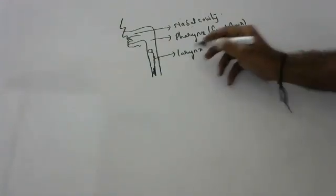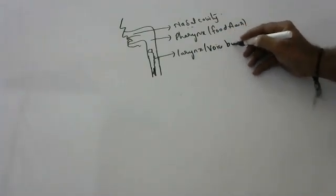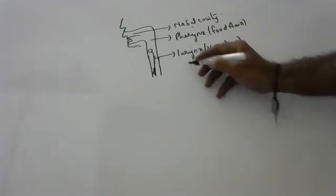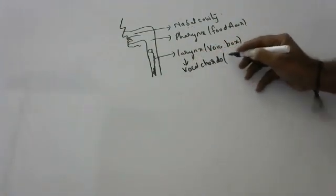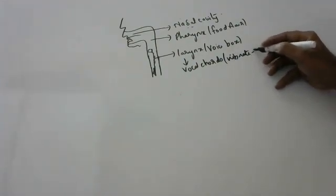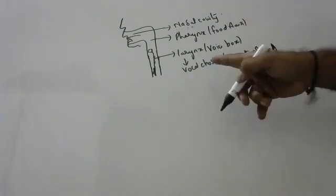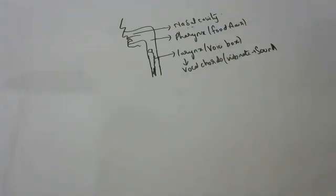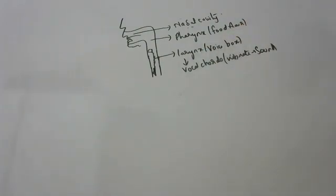The larynx is also called the voice box. The larynx has vocal cords which vibrate when we are talking and produce sound. It is because of the larynx that we are able to talk.